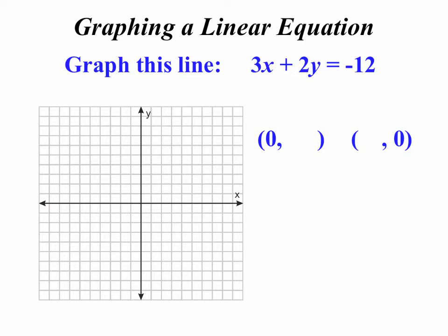So substitute 0 in place of x. Can you see that y equals negative 6? So there's your y-intercept. Substitute 0 for y. And what's your x-intercept? So now connect those two dots and there is your line. Again, our strategy for graphing this line was to find the x and the y-intercepts.